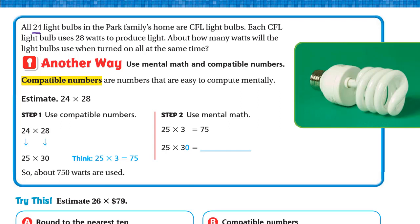Another example: all 24 light bulbs in the Park family's home are CFL light bulbs. Each CFL light bulb uses 28 watts to produce light. About how many watts will the light bulbs use when turned on all at the same time? We have 24 bulbs, each is 28 watts, so we multiply 24 × 28. He said 'about,' so we will estimate.